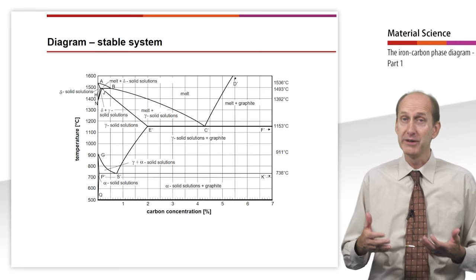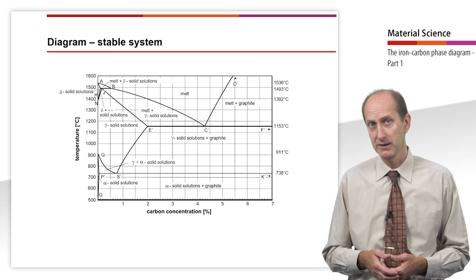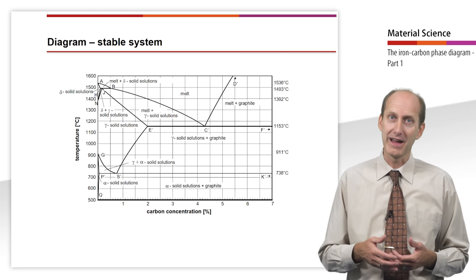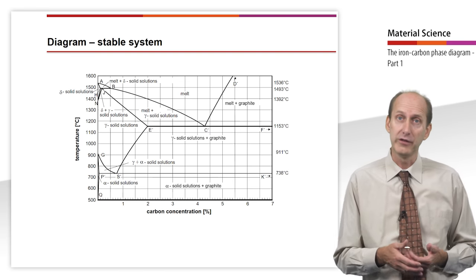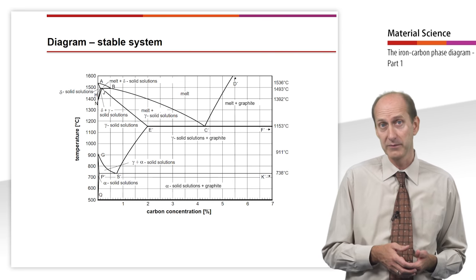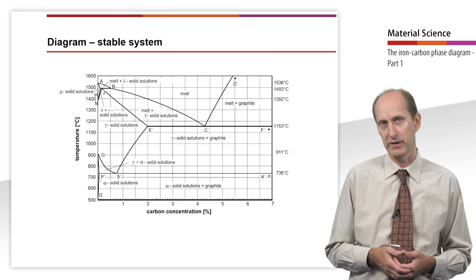Given that carbon is soluble in iron, to a certain extent, but iron is insoluble in carbon, carbon precipitates out as graphite. Thus, the remaining phase fields are melt and graphite, gamma solid solution and graphite, and finally alpha solid solution and graphite.